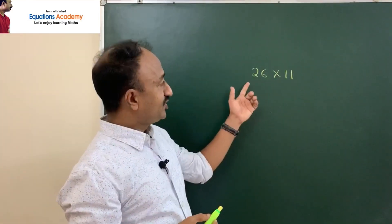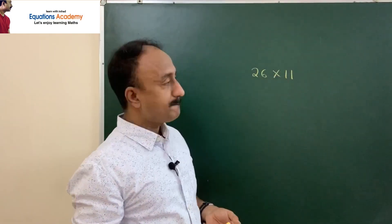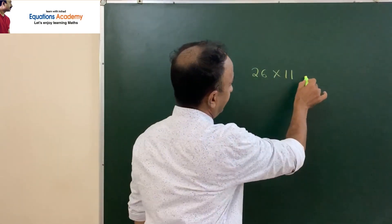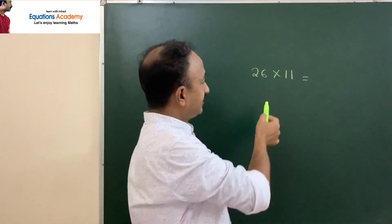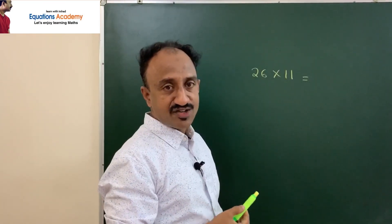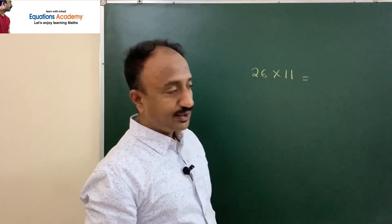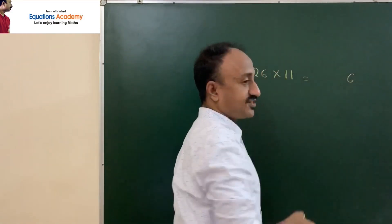26 into 11. The first step is, see the 6 here. This is the digit at the one's place, digit at the unit's place. Write the 6 here as our answer, 6.